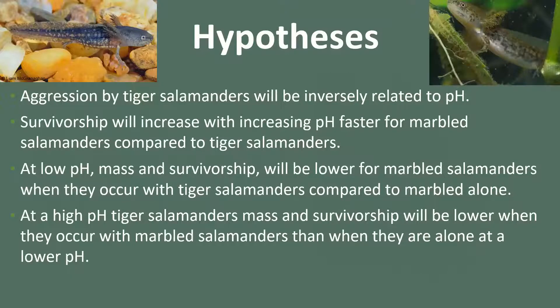My hypotheses are: first, that aggression by tiger salamanders will be inversely related to pH; second, that survivorship will increase with increasing pH faster for marbled salamanders compared to tiger salamanders; third, that at low pH, mass and survivorship will be lower for marbled salamanders when they occur with tiger salamanders compared to marbled alone; and lastly, at high pH, tiger salamander mass and survivorship will be lower when they occur with marbled salamanders than when alone at lower pH.